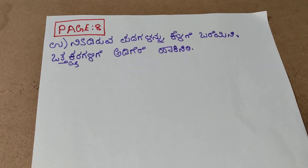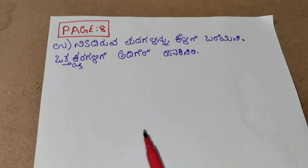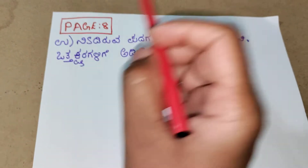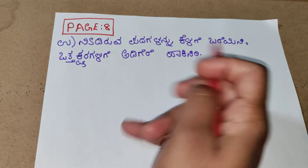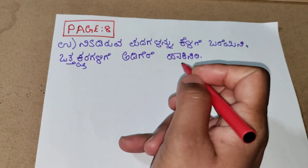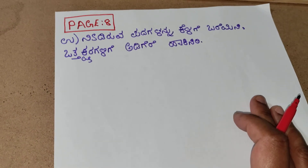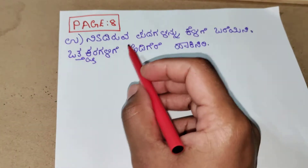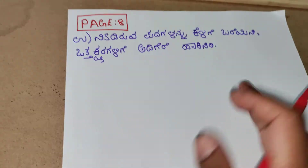Hello everyone, welcome to my channel. Today, let's do some exercise questions from page 8. You need to write down words with otthakshara and underline them. You can refer to your textbook for the words and you should underline the otthakshara.